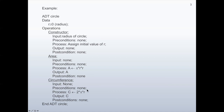For the circumference operation, there is no input, similar to area. There are no preconditions. In the process, the circumference C is calculated as 2 multiplied by pi, multiplied by r. Whatever is calculated is given as output, and there is no post-condition.